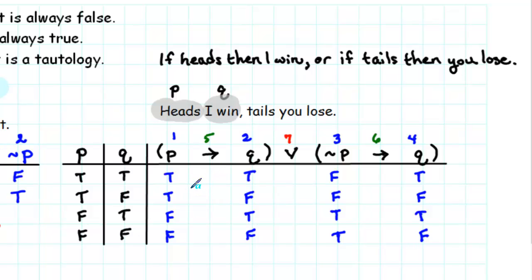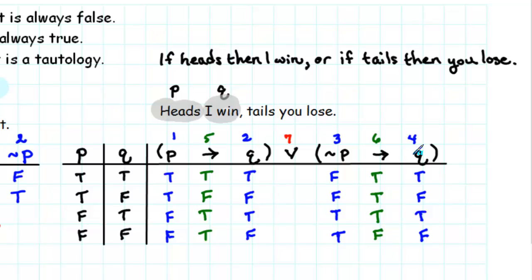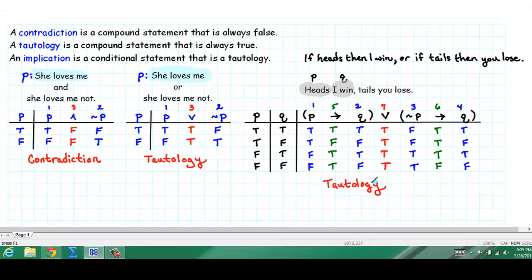Going through and finding all places where the first part is true and the second part is false, we place a false there — specifically where we have true and false, that conditional is false. In every other case the conditional is true, so we fill in all remaining values with true. Finally, we form the disjunction of columns 5 and 6. An OR statement is only false if both parts are false. In this case, there's at least one true in each row, so we fill in true for all cases.